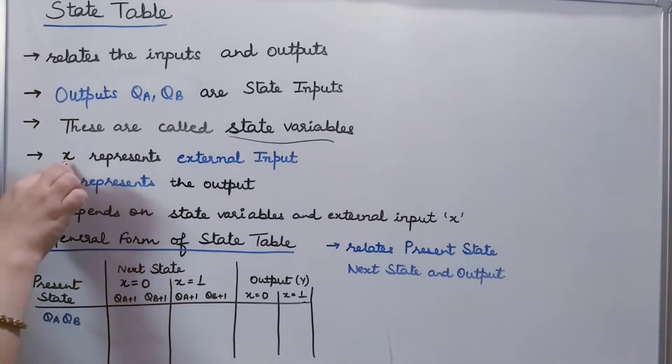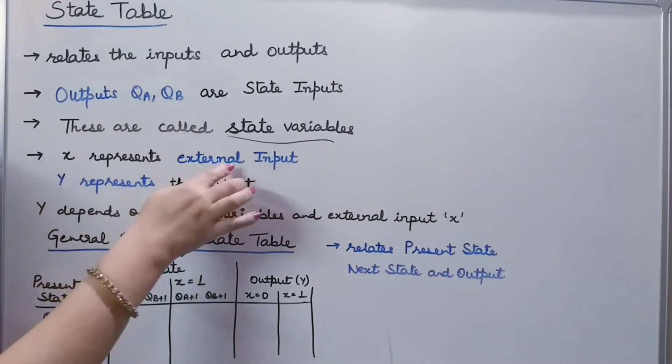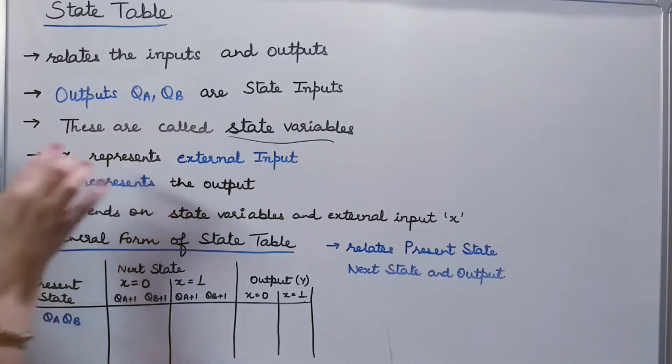Now, the two important factors of a state table is X and Y. A small x represents the external input. This is a state input. This is the external input to the sequential circuit.